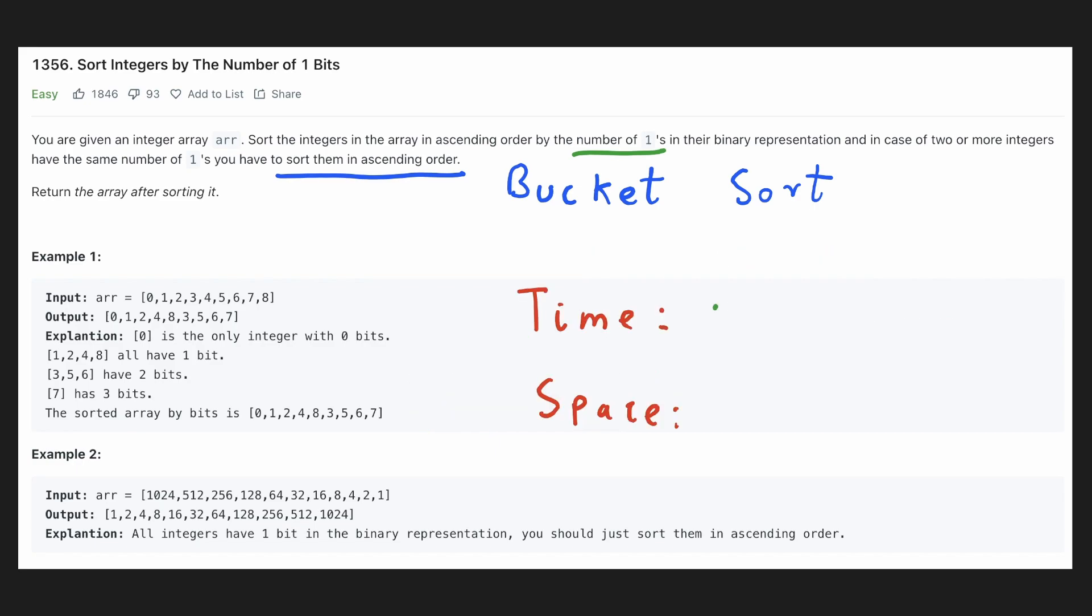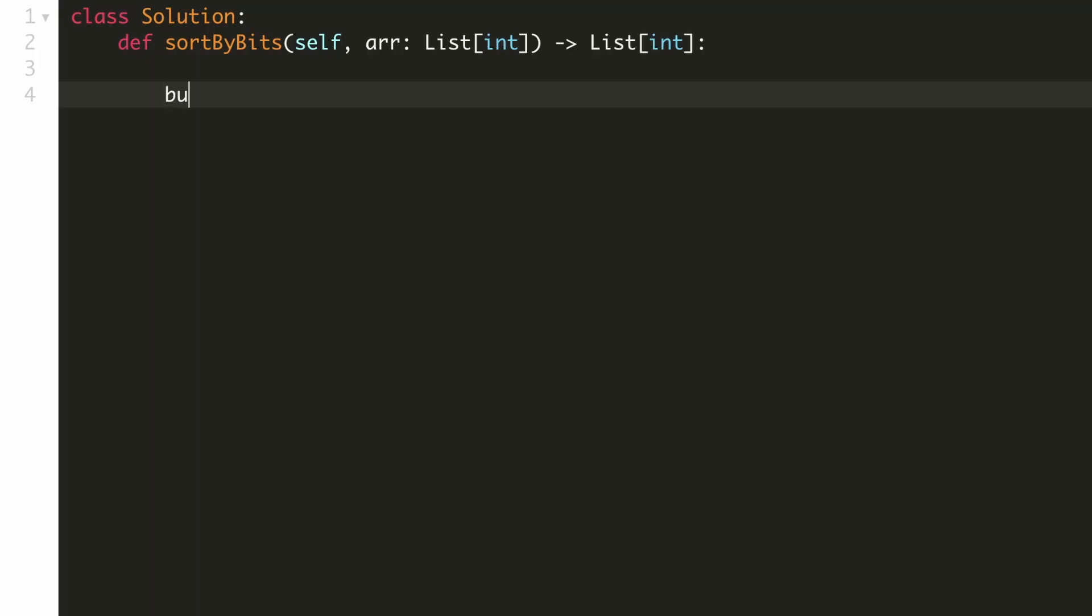The time complexity of this would be O(n log n) because all the numbers can fall on the same bucket and we have to sort them. And the space complexity would be O(n) because we have to store all the numbers in the buckets. Let's implement our solution. Let's initialize our 32 empty buckets. So we'll initialize an empty list for each of the 32 buckets. We'll initialize an empty list for our output.